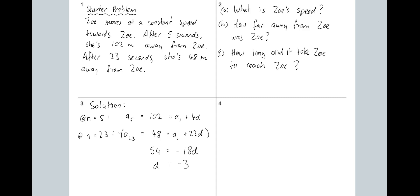We can write that conclusion: Zoe is travelling three metres per second. If you wrote negative 3 metres per second, put a note to yourself that speed is always written positively — well, actually written without a sign. It's just a speed.